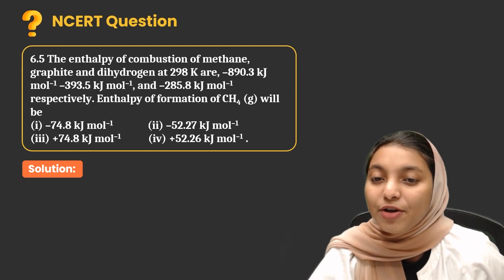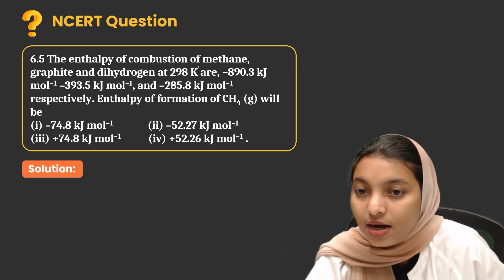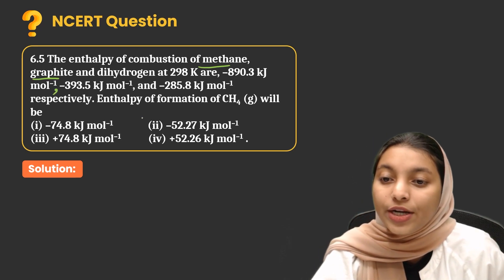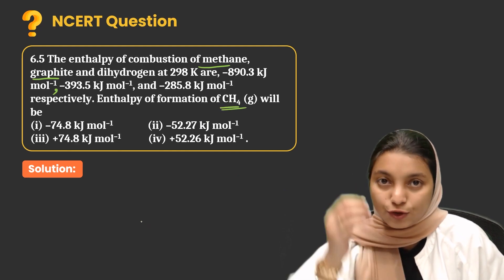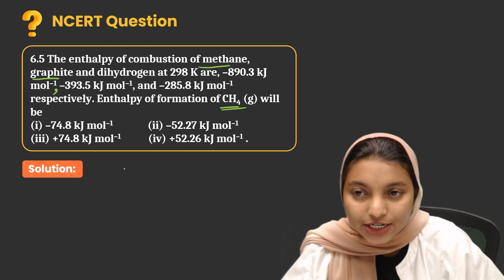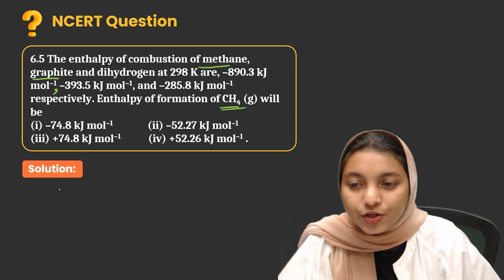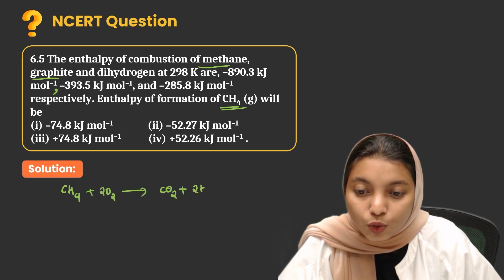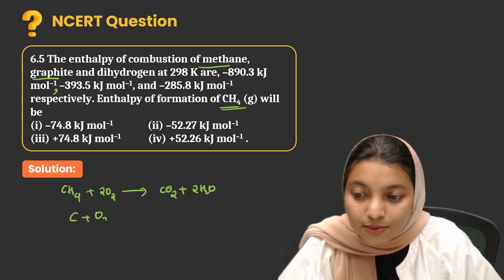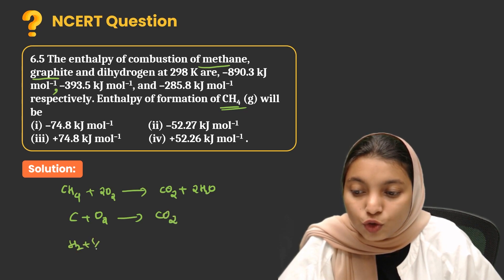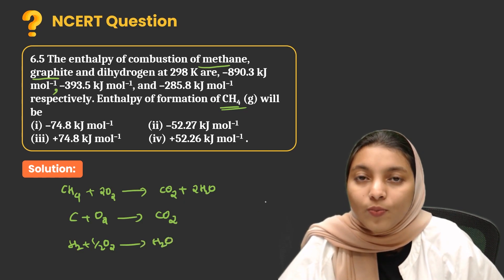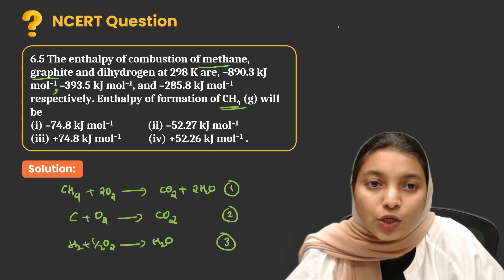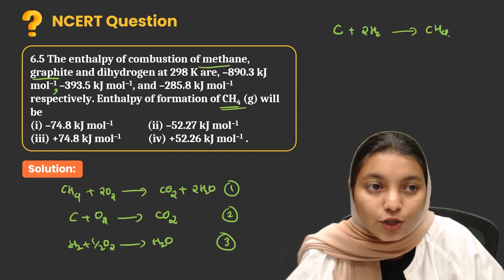The enthalpies of combustion of methane, graphite, and dihydrogen at 298 K are minus 893.3, minus 393.5, and minus 285.8 kilojoule per mole respectively. What is the enthalpy of formation of CH4? First we write combustion equations: CH4 + 2O2 → CO2 + 2H2O, then C + O2 → CO2, and H2 + ½O2 → H2O. What we need to form is: C + 2H2 → CH4.